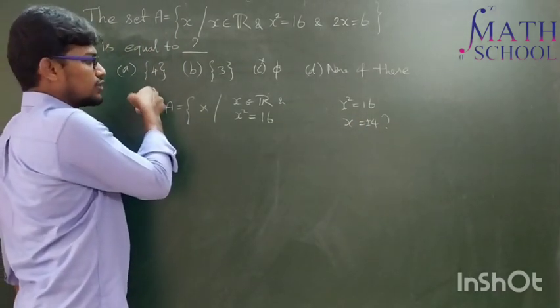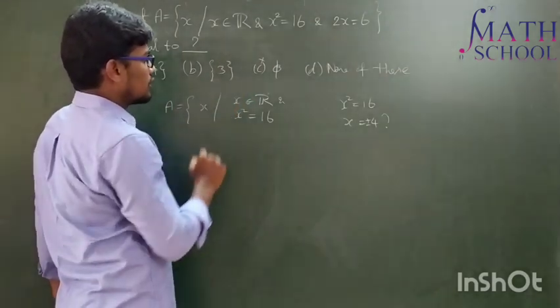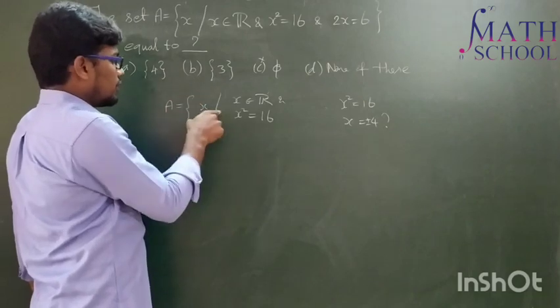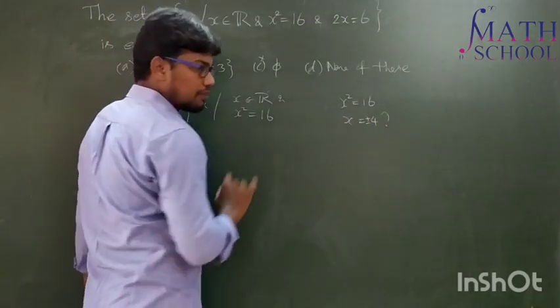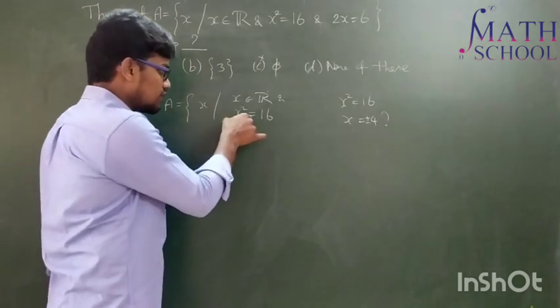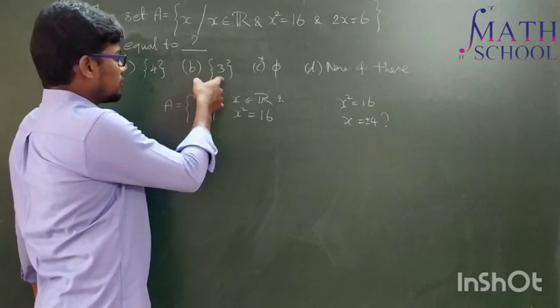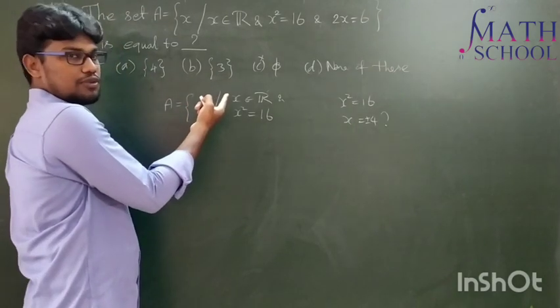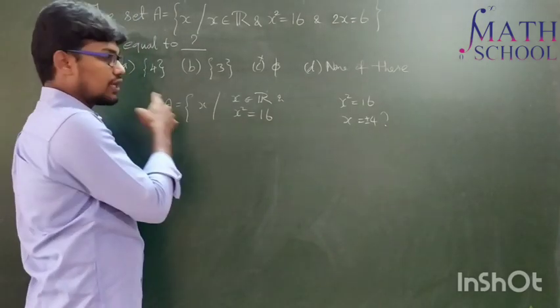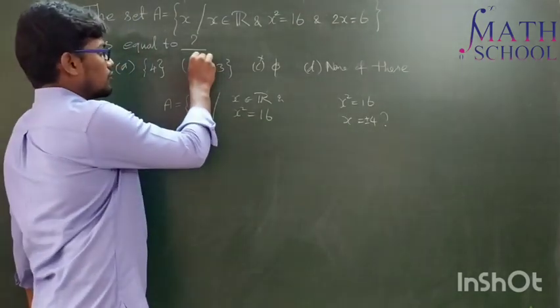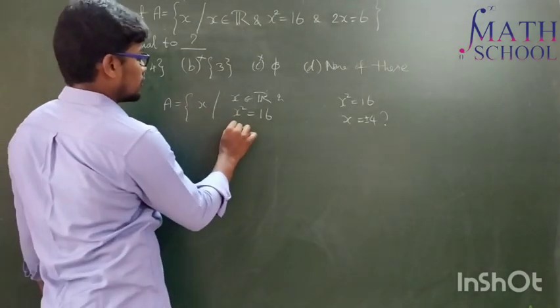There is an option which contains singleton {4}, but we can't choose it now because we still have more data. But absolutely, x should have either plus 4 or minus 4 because this x satisfies this condition. But look at this option: this option does not have 4. By this condition, we are sure that our set should contain 4, so with this data we can eliminate this option.